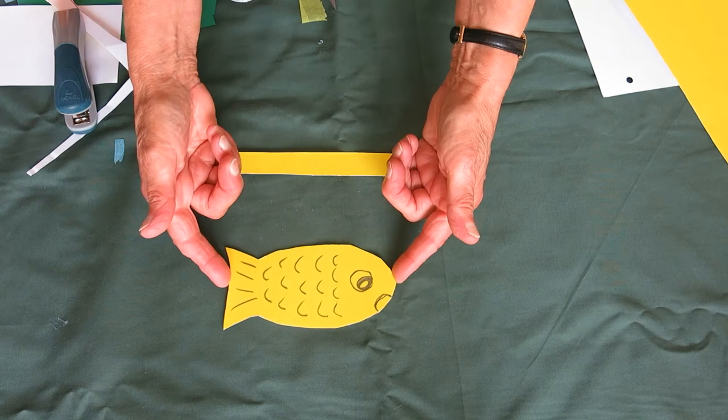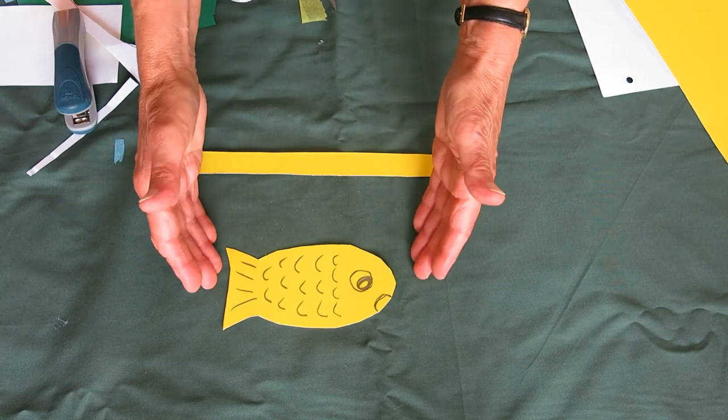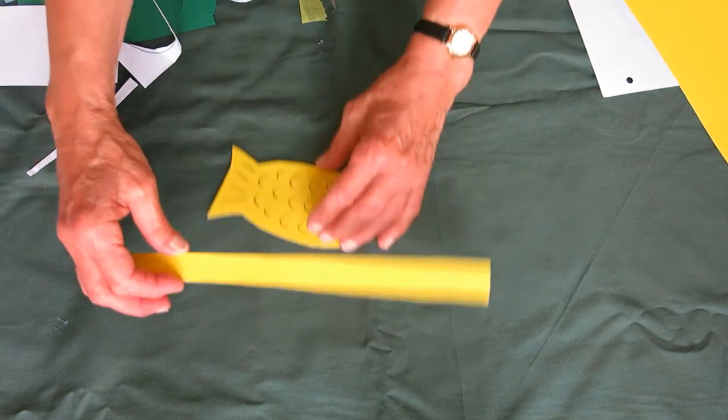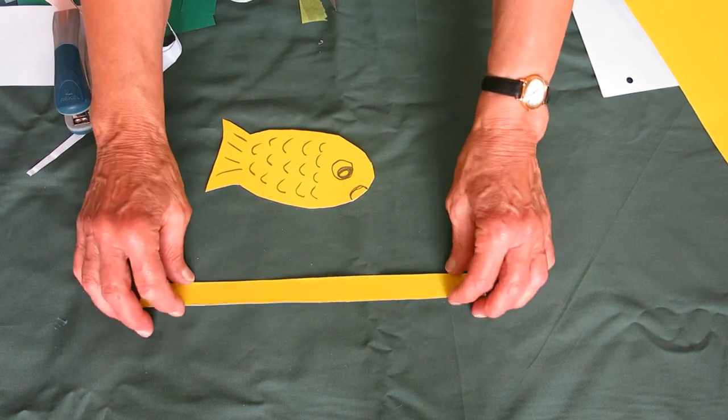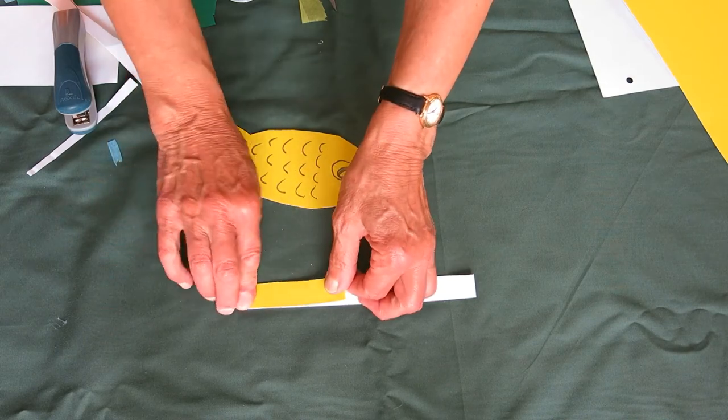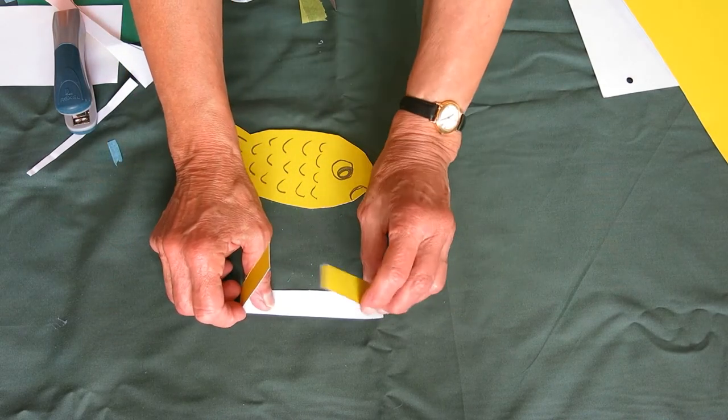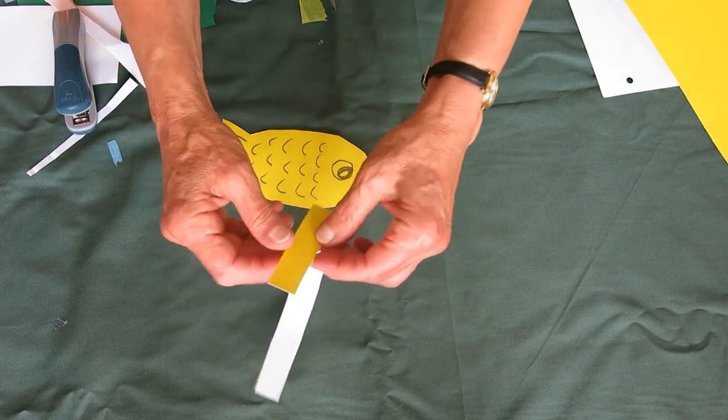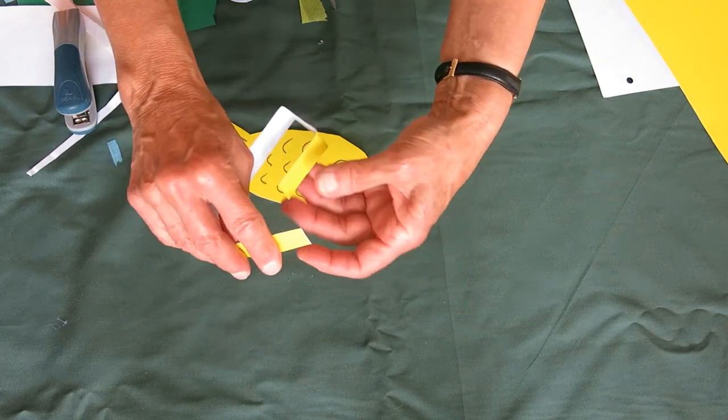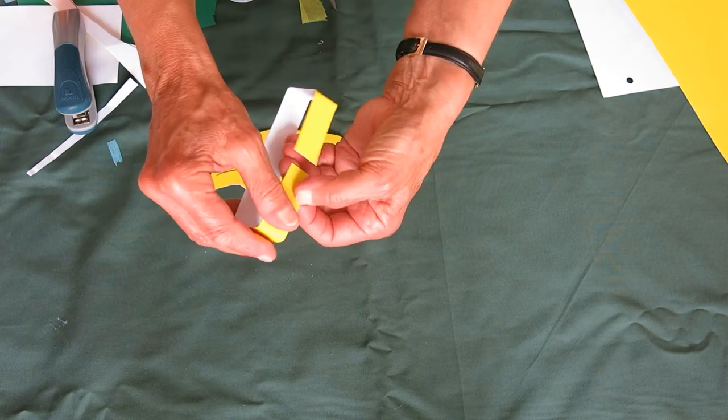Once you've made your fish you need to stick it to the back of your display case. So if you take a strip of card and just fold it in, fold it in again, and then the same at the other end, so you've made a sort of a box shape.